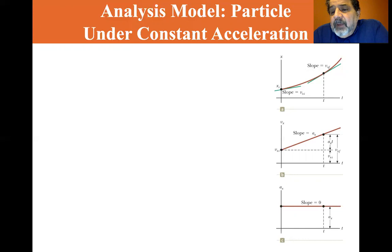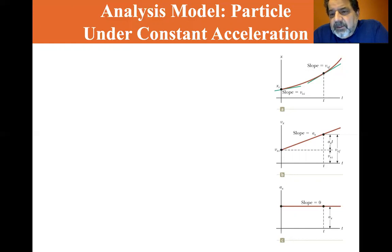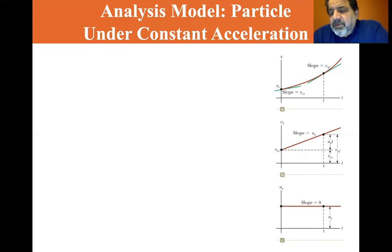So again, the derivative of the position, which is the slope, is velocity. The derivative of velocity, which is the slope, is acceleration. So velocity is the first derivative of position. Acceleration is the first derivative of velocity. Acceleration is also the second derivative of position.